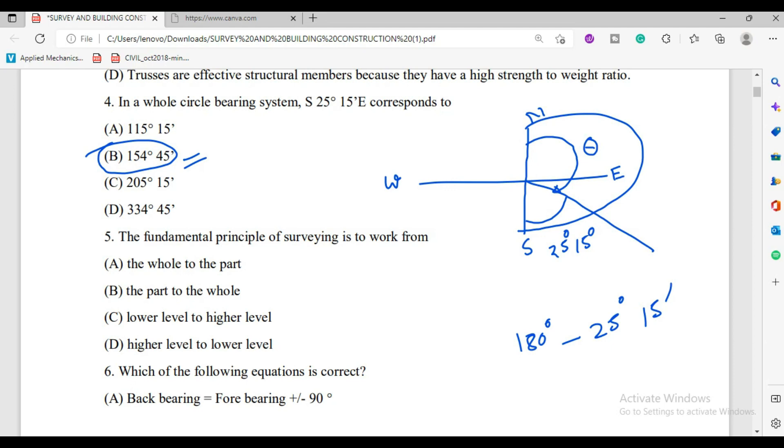Next, question number 5. The fundamental principle of surveying. So surveying or fundamental principle is work from whole to part, work from part to whole, work from lower level to higher level, higher level to lower level. The surveying fundamental principle is at least two measurements. Our second was to work from whole to part. That means first identify the large points, then go part wise from whole to part. So option A is correct.